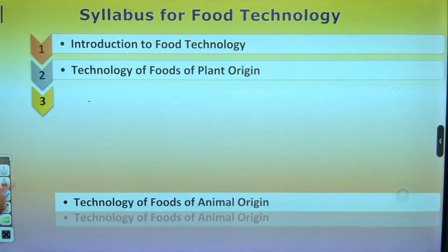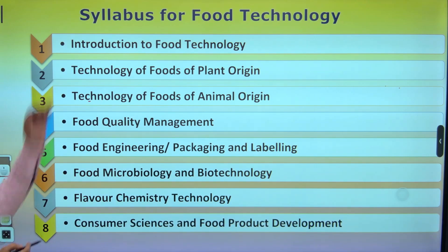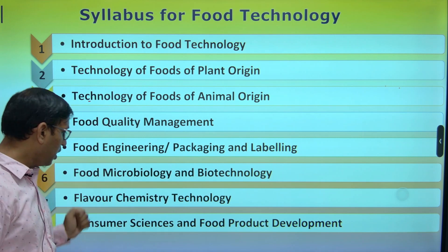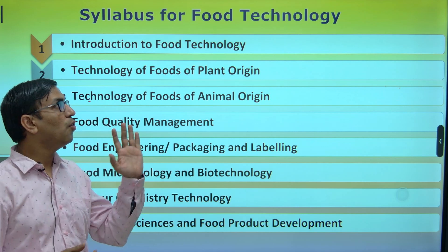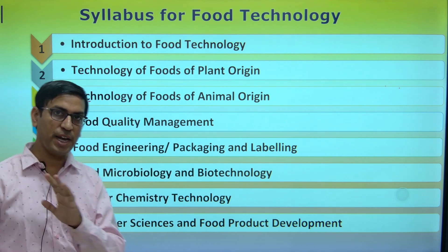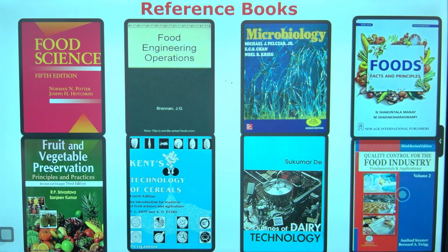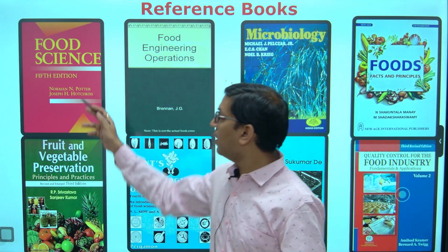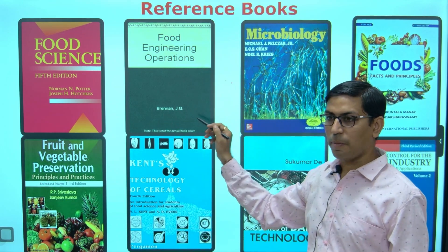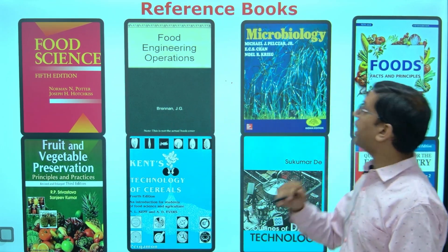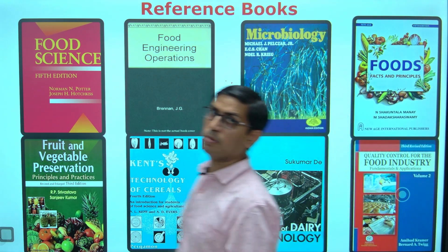Definitely these are all the most important parameters. That is the whole — eight points are there which we have discussed covering the whole things, from introduction of food technology to consumer sciences — eight important chapters for the food technology ASRB NET syllabus. Some key reference books: Potter, followed by F&B Preservation by Srivastava, then Food Engineering Operation by Brennan, then Kent — Cereal Technology — and some other books. Kramer Volume 1st and Volume 2nd — both books are there.